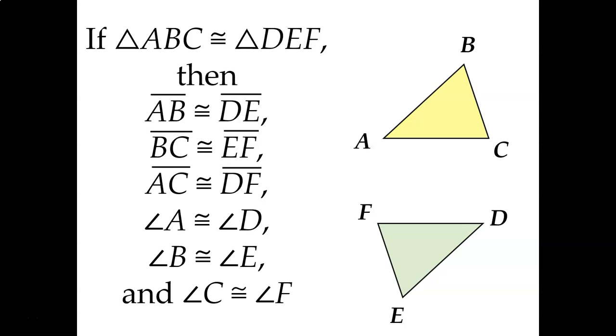In other words, if I knew that triangle ABC was congruent to triangle DEF, I know all six of the things listed there — all three pairs of sides are congruent and all three pairs of angles are congruent.